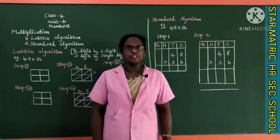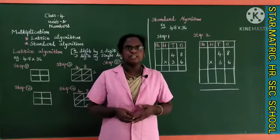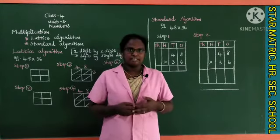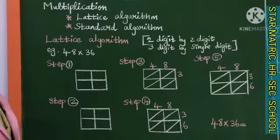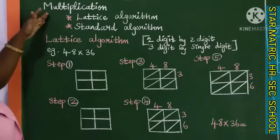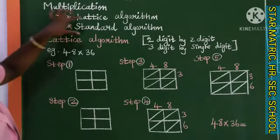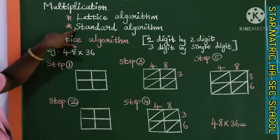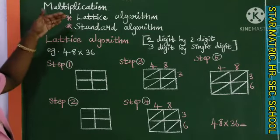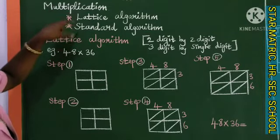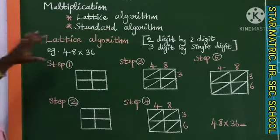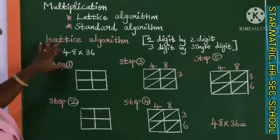Good morning, my dear star school students. Today we are going to learn about numbers in Unit 2 Maths. In multiplication, there are two methods: one is the lattice algorithm, and the other is the standard algorithm. First, we will look at the lattice algorithm method.